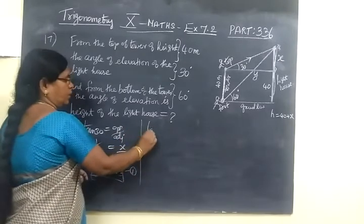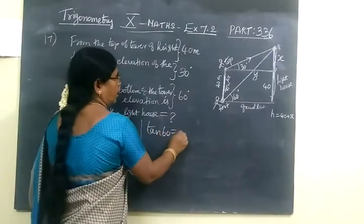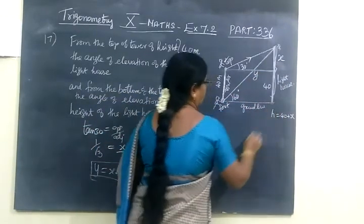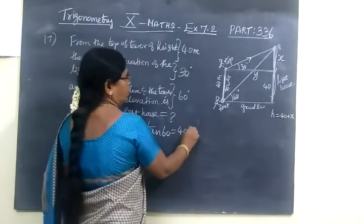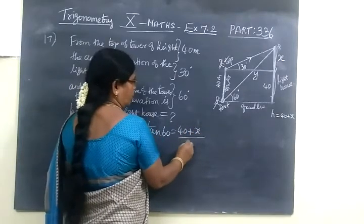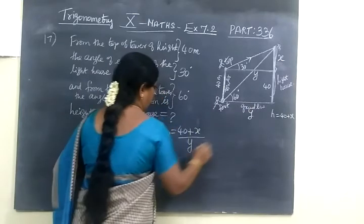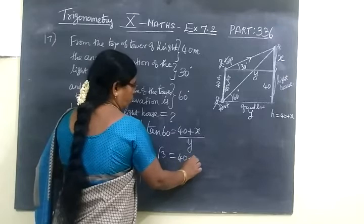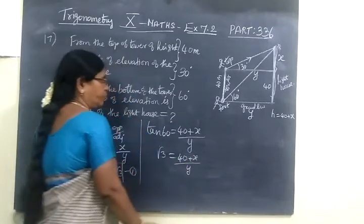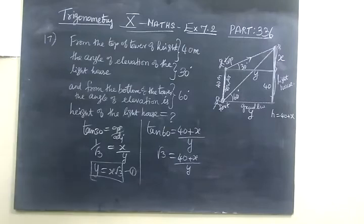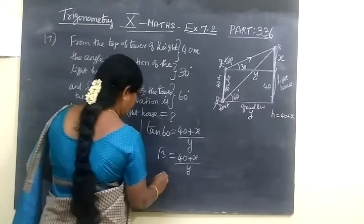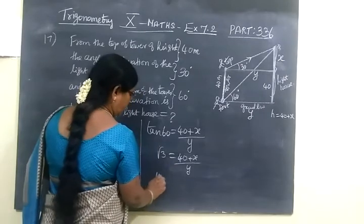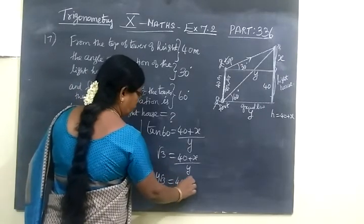Next we are taking tan 60. Tan 60 means this full height — the opposite side is 40 plus x, and the adjacent is y. This ground covers y, so this is also y. Then tan 60 equals root 3. So root 3 equals (40 plus x) by y. No other distance is given, only this 40. So cross multiply: y root 3 equals 40 plus x.